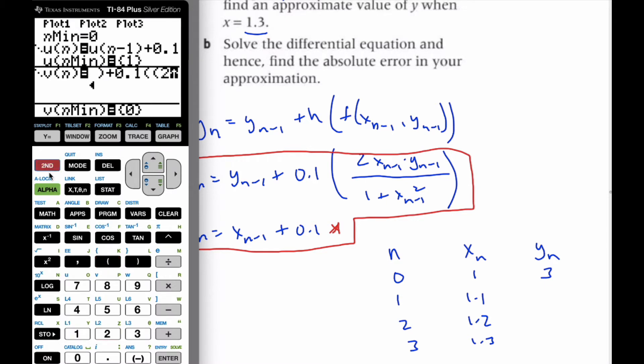So here's my y_(n-1) plus 0.1 times this mess here. So the top of the fraction is 2, x, n minus 1, times the y of n minus 1.